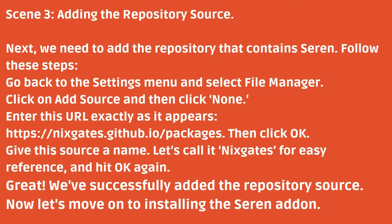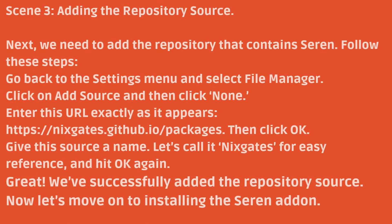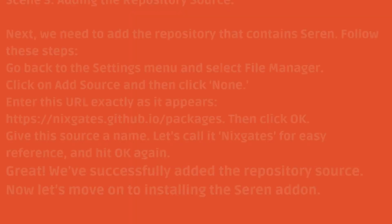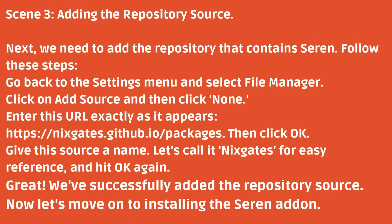Adding the repository source. Next, we need to add the repository that contains Seren. Follow these steps: Go back to the Settings menu and select File Manager. Click on Add Source, then click None. Enter this URL exactly as it appears: https://nixgates.github.io/packages. Then click OK. Give this source a name — let's call it Nixgates for easy reference — and hit OK again. We've successfully added the repository source.